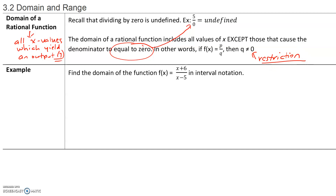As an example, let's find the domain of the function f(x) = (x + 6) / (x − 5) in interval notation. First, we want to ask ourselves: is there a restriction? Any time we have a rational function, there is a possibility of a restriction because our denominator x − 5 cannot equal zero. Because if it did, we would have division by zero.